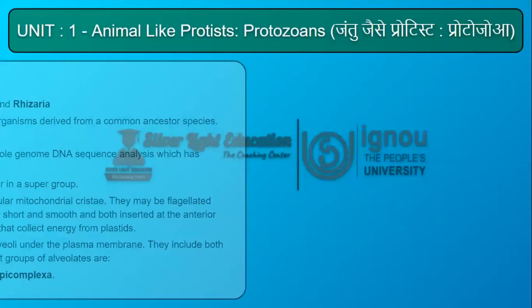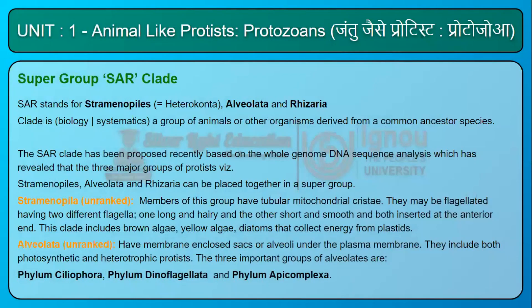Supergroup SAR Clade. SAR stands for Stramenopiles, equals Heterokonta, Alveolata, and Rhizaria. A clade, in biological systematics, is a group of animals or other organisms derived from a common ancestor species. The SAR clade has been proposed recently based on whole genome DNA sequence analysis, which has revealed that these three major groups of protists can be placed together in a supergroup.